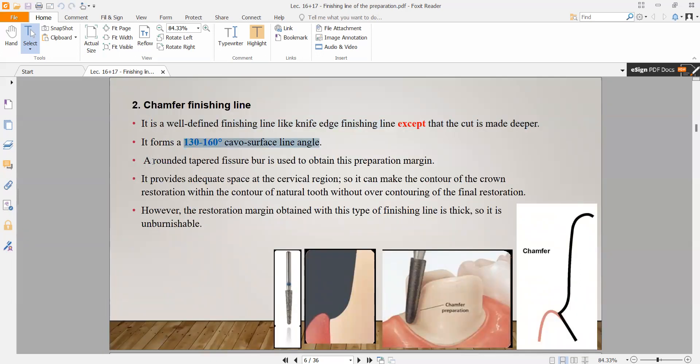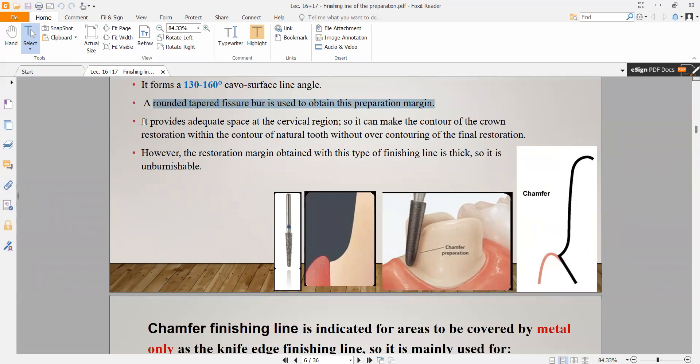The bur we use to do this is a round tapered fissure bur to obtain this preparation margin. It provides adequate space for the cervical region and can make the contour of the crown restoration without over-contouring the final restoration. However, the restoration margin obtained from this finishing line is thick, so it is unburnishable.